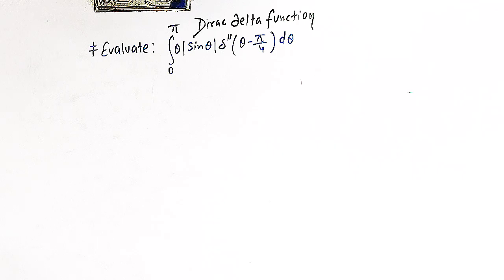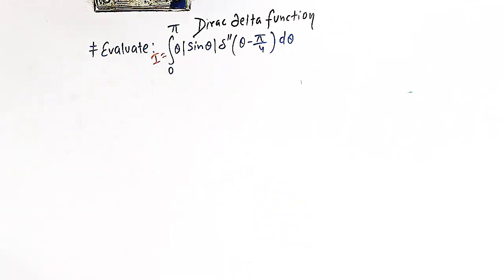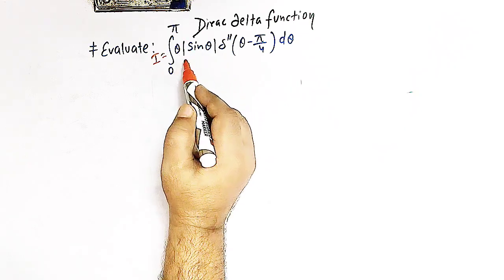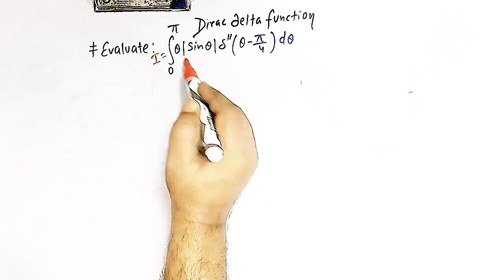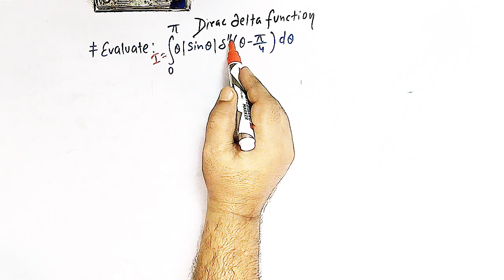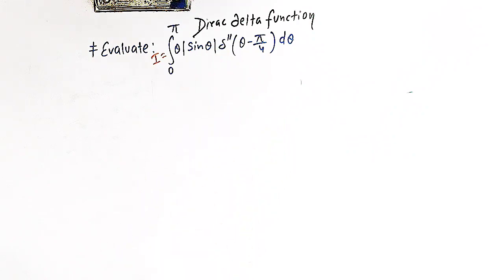Let us call this integral I. We can see that the absolute value of sin θ is involved, and the second derivative of the delta function occurs. Let us see how we can solve this integral using properties of the Dirac delta function.